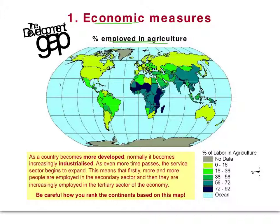In terms of the weakness of this measure, the main problem is related to the service sector, because it covers such a wide range of different job types. On one hand, you have the informal sector in LEDCs, where people who can't get a formal job go into the streets and sell whatever they can to make a living. That is a service sector job — but so is being a brain surgeon. The differences in skills, education required, and salaries earned between those two are obviously vast, and yet they're part of the same category.